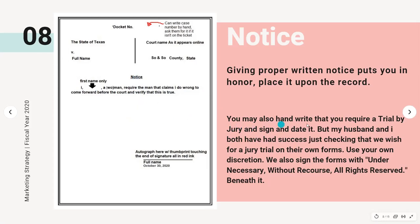You may also handwrite that you require a trial by jury and sign and date it, but my husband and I have both had success just checking that we wish for a jury trial on their own forms — use your own discretion. We also sign the forms with 'under necessity, without recourse, all rights reserved' under our signature.